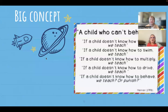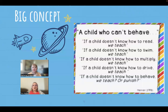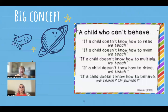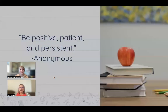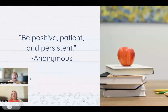Here's the big concept: a child who can't behave. If a child doesn't know how to read, we teach. If a child doesn't know how to swim, we teach. If a child doesn't know how to multiply, we teach. If a child doesn't know how to behave, do we teach or do we punish? We want to give these students the opportunity to learn and give them the strategies and skills they need. It all starts at the core — begin in the classroom with expectations and how to behave, then layer on extra supports, just like you would with reading or math. Thank you so much, Toni — so much to think about for behavior intervention strategies.